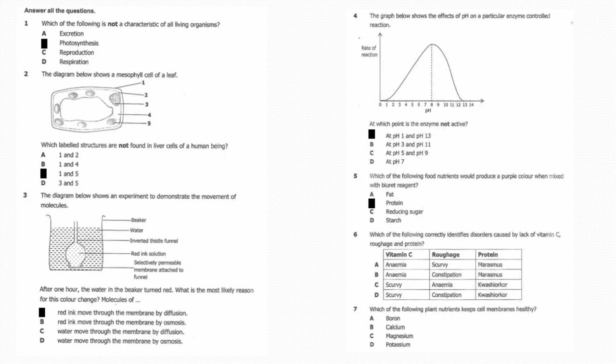Question six: Which of the following correctly identifies disorders caused by the lack of vitamin C, roughage, and protein? The answer is D. For vitamin C, scurvy; for roughage, constipation; and for protein, kwashiorkor. Number seven: Which of the following plant nutrients keeps cell membranes healthy? The answer is B, calcium.